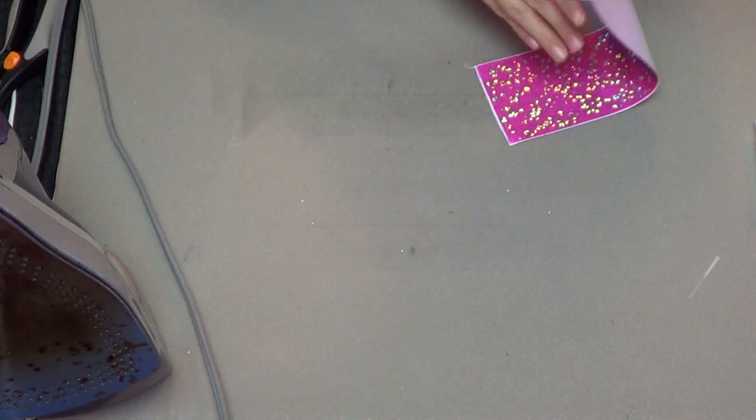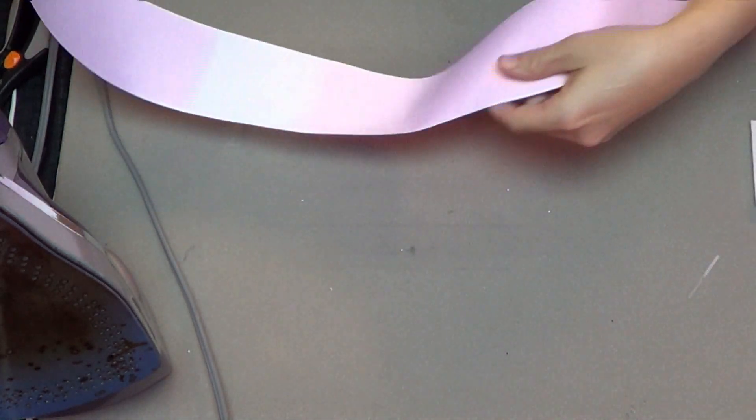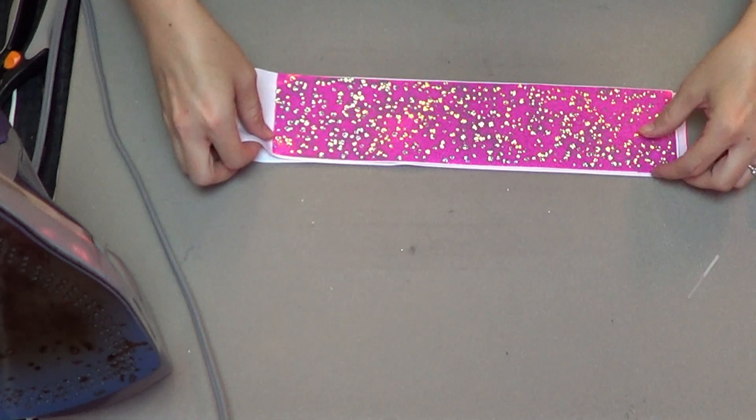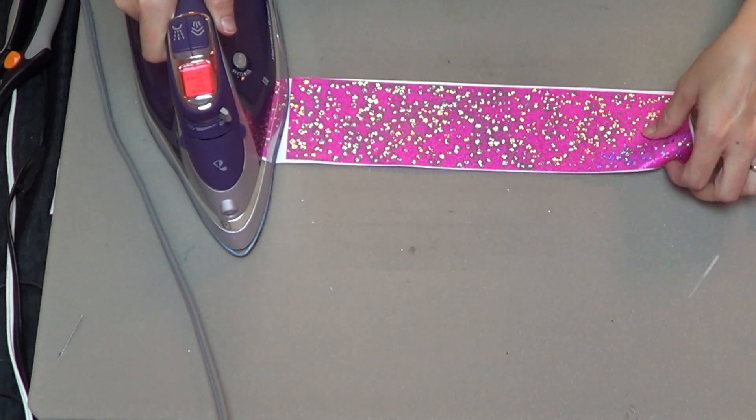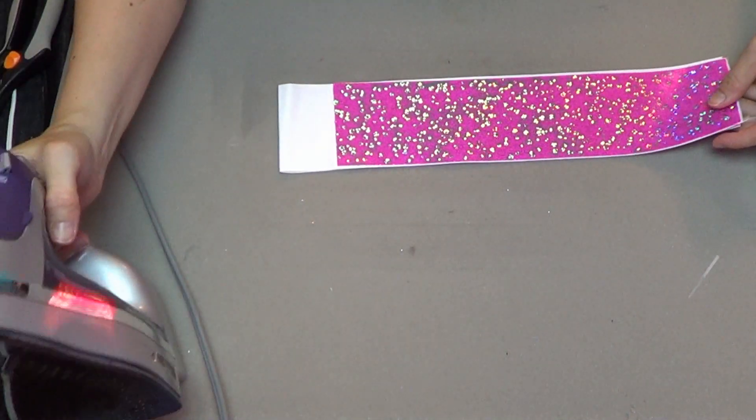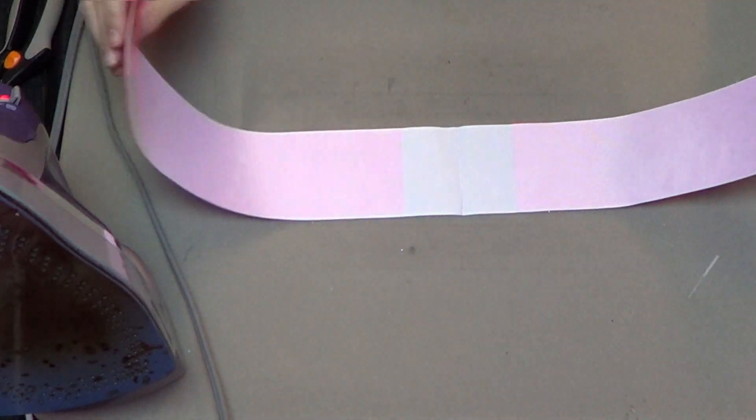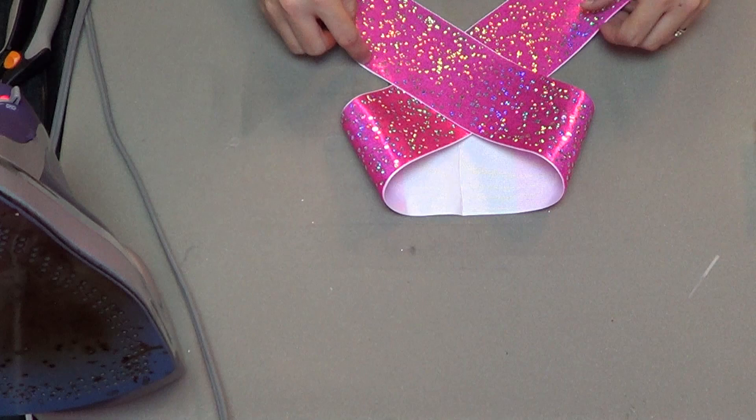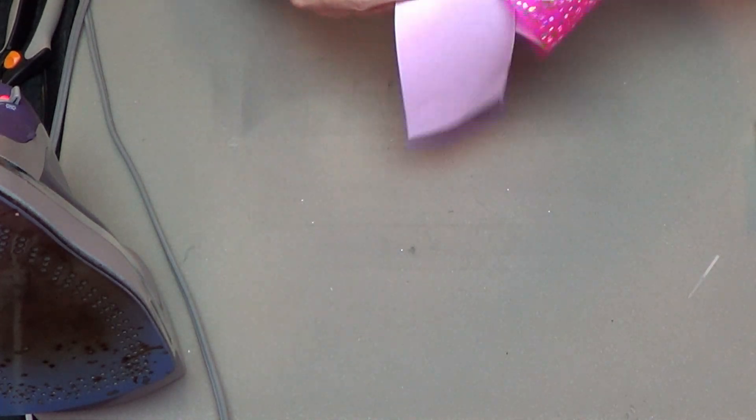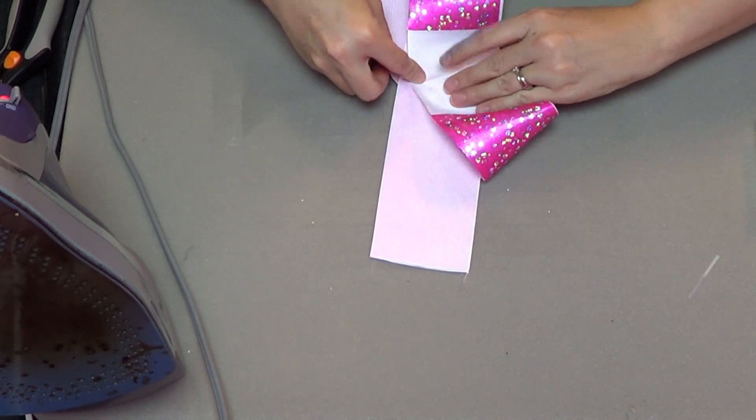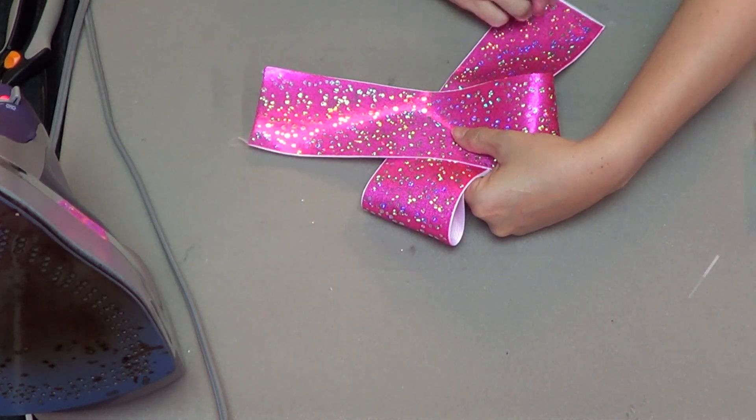Now we can move on to folding the bow. What I like to do is fold it in half and just crease the center—makes it very easy to size your bow. Cross your tails, make sure they look even, and then use that center crease to help you line up the back and keep it straight.